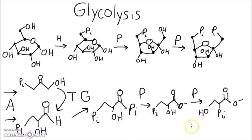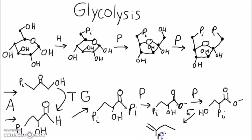2-phosphoglycerate is converted by enolase into phosphoenolpyruvate, which has an enol group — the double-bonded carbon — with a phosphate group hanging off the bottom. Then pyruvate kinase converts that into pyruvate.